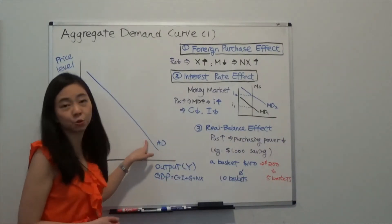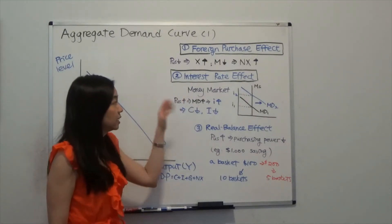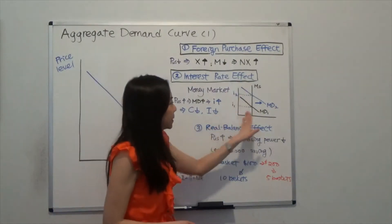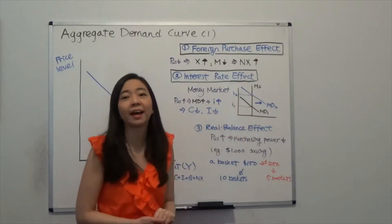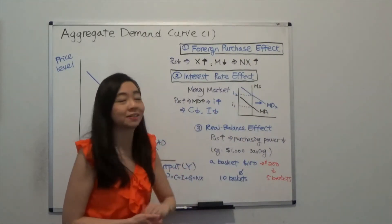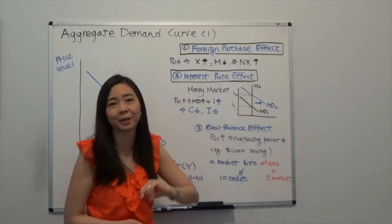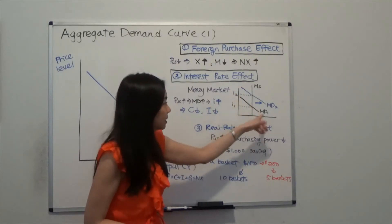The second is interest rate effect. In order to understand that, we need to talk about the money market. So we can see this is the money market and that's the money demand. That's the money supply. Money supply is controlled by a central bank and therefore it is a vertical line.